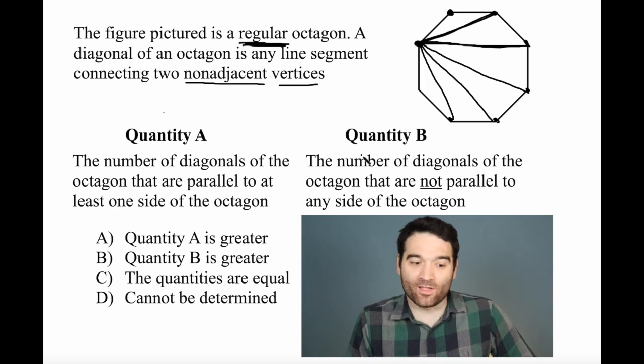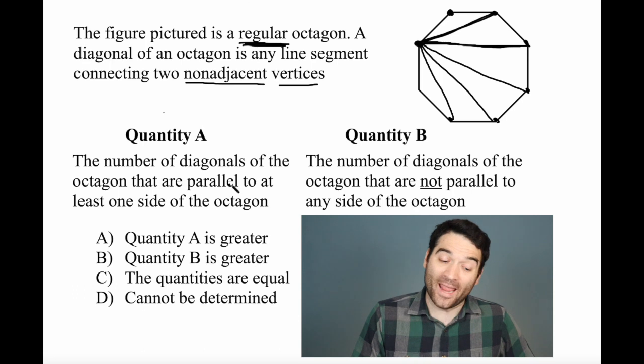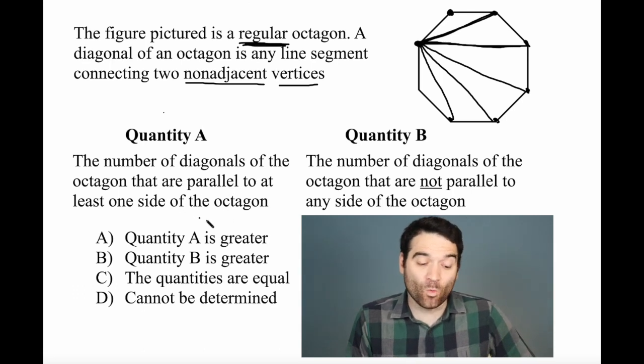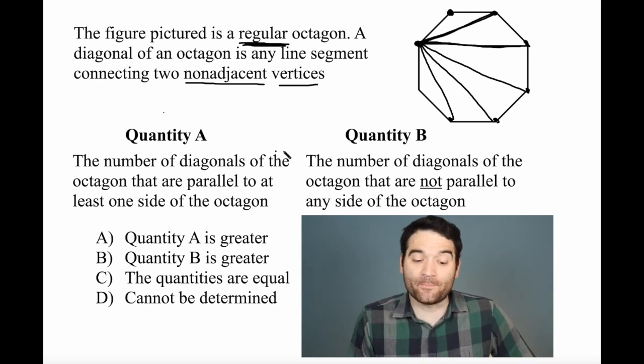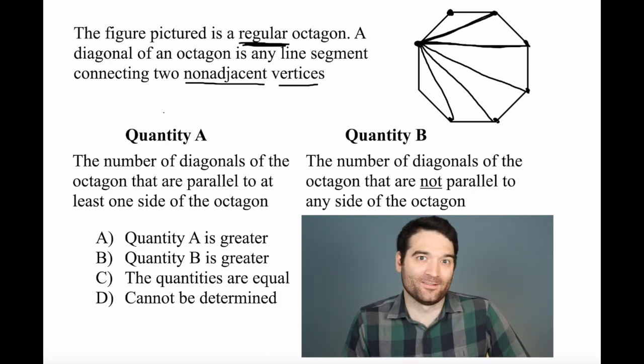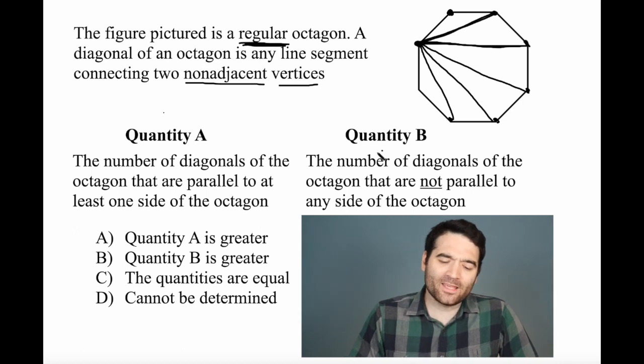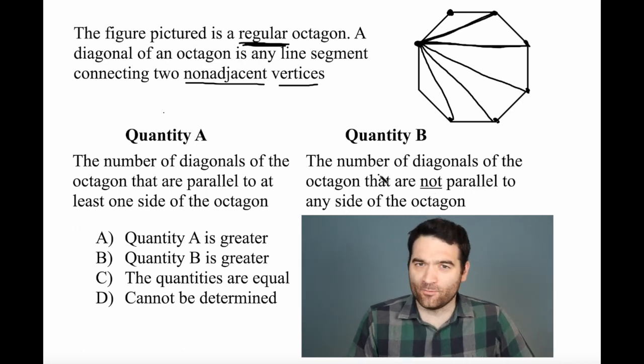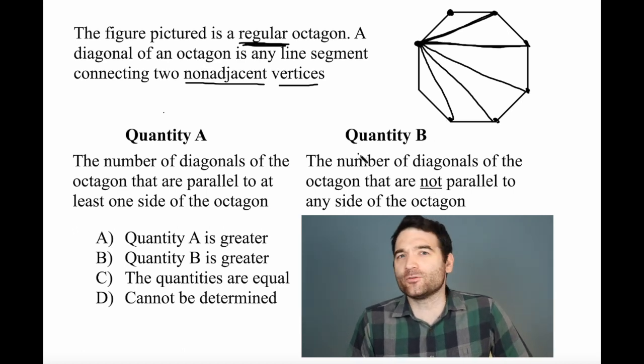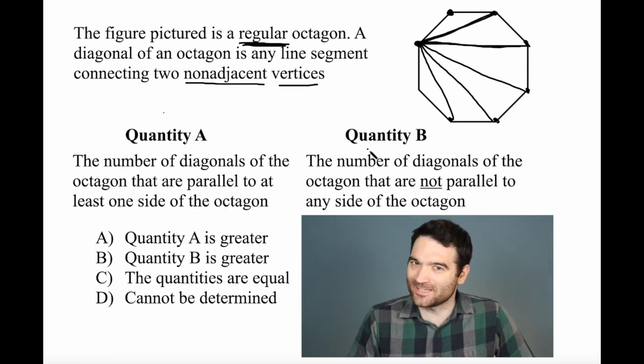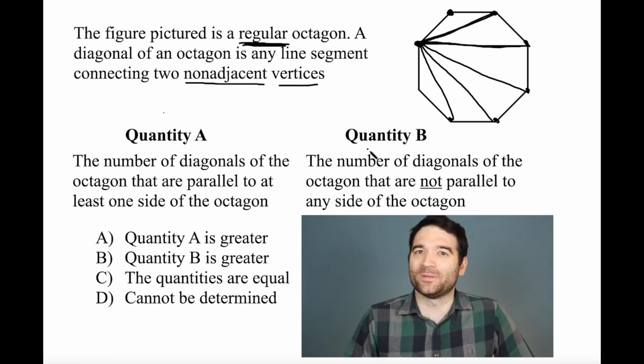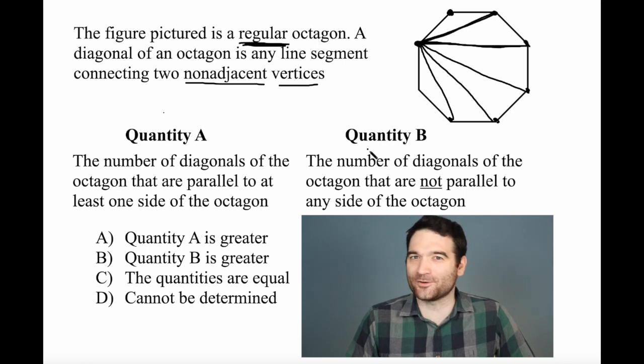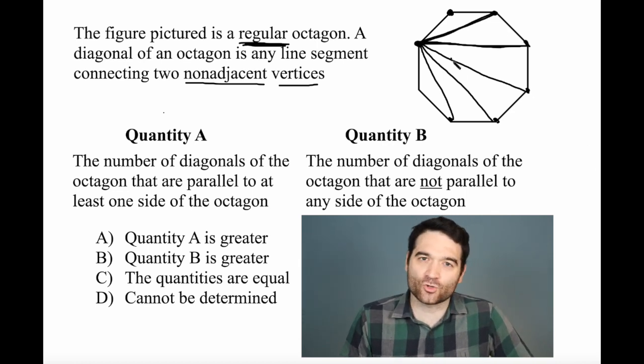Now, here's the headline of the question. We want to know what's greater: the number of diagonals that are parallel to at least one side of the octagon compared to the number of diagonals that are not parallel to one side of the octagon. Well, I'm going to give you sort of an intuitive way to go about this. And then if you're the kind of person who really likes to seal things up, we'll do it a bit of a longer way. So the shorter way first and then the longer way. Here's the shorter way.